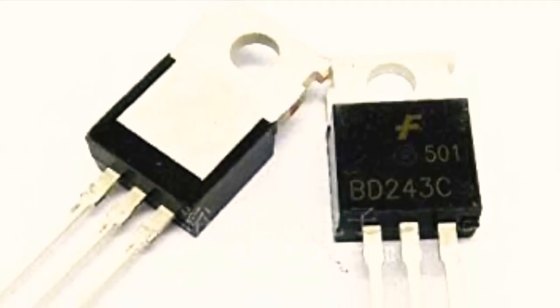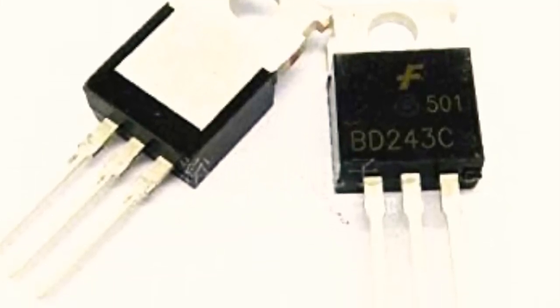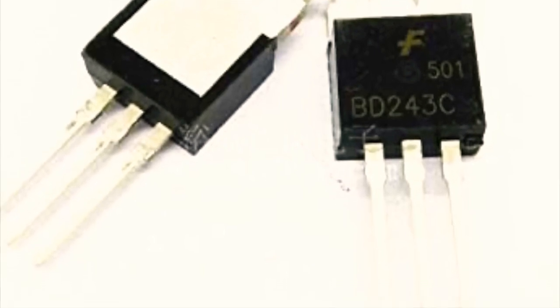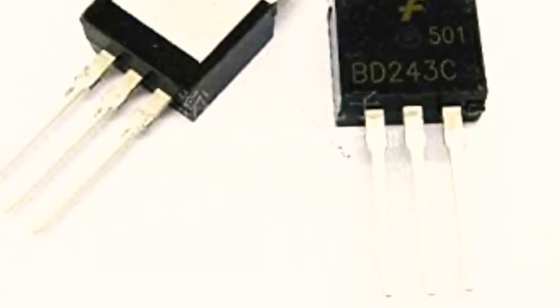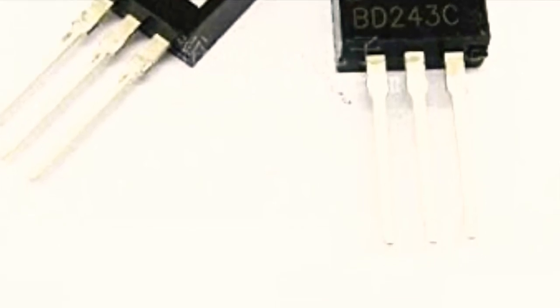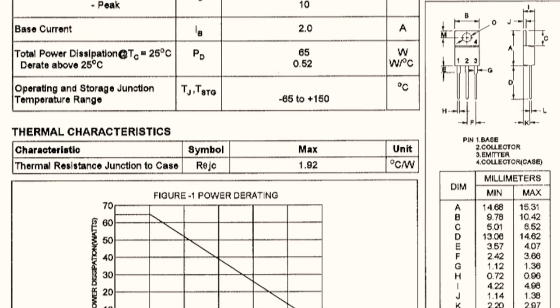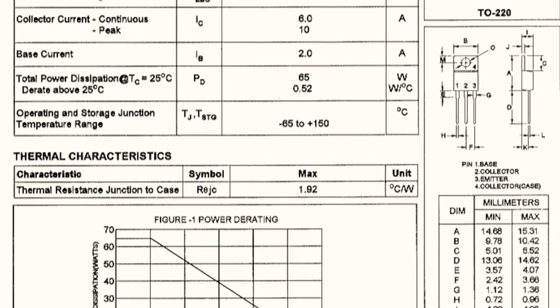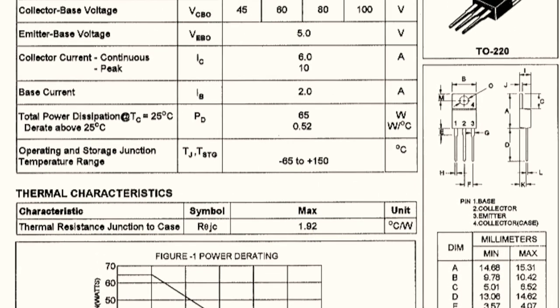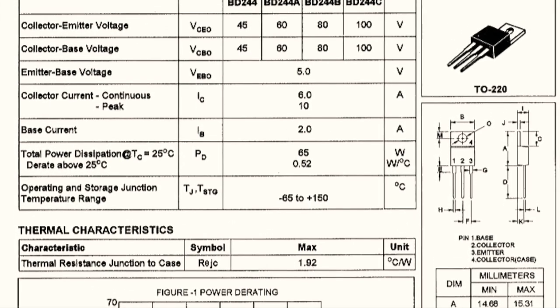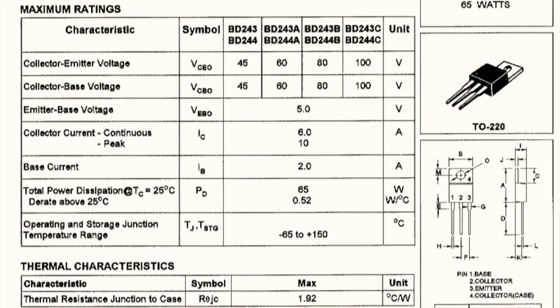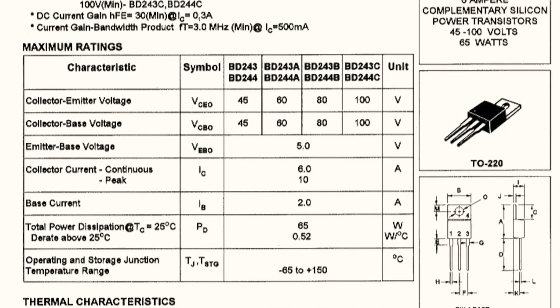In this kit we are being provided with BD243C power transistor. A transistor is basically a switch which converts DC into high frequency AC. According to its datasheet it can handle up to 6 to 10 amps, but at max power it will be extremely hot and it works at a frequency of 3 megahertz.